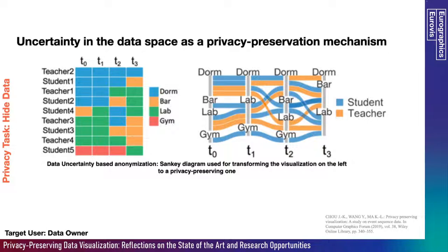The most important task observed in our collection of papers is hiding data. It is important for the data owner to hide data in order to increase privacy. On the left-hand side, we can see from a matrix that teacher 2 goes to the dorm in every time interval, and student 1 goes to the dorm in the first three time intervals and then goes to the bar in the last intervals. But if we use the Henke diagram on the right-hand side, we can identify different groups of students and teachers but cannot individually pinpoint their location in each time interval. This example uses uncertainty in the data space as a privacy preservation mechanism.